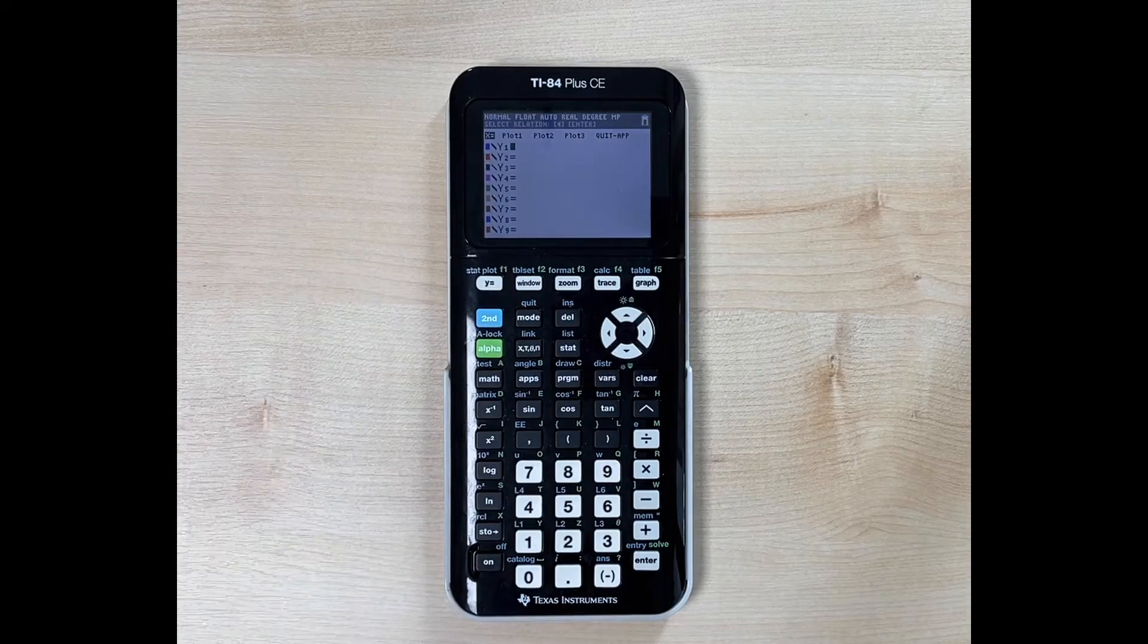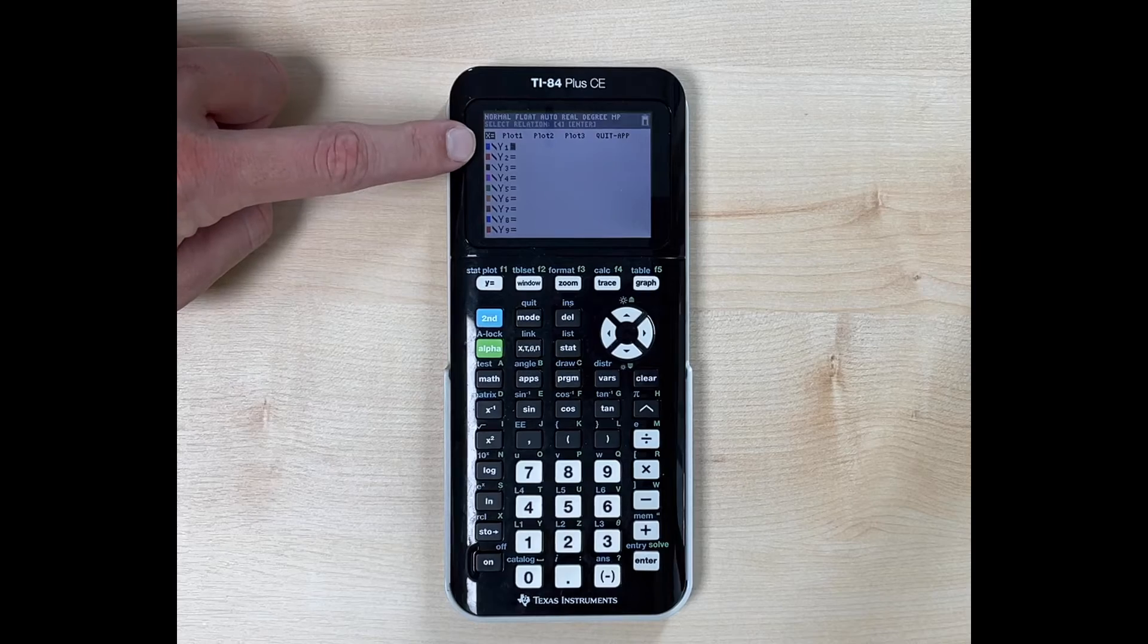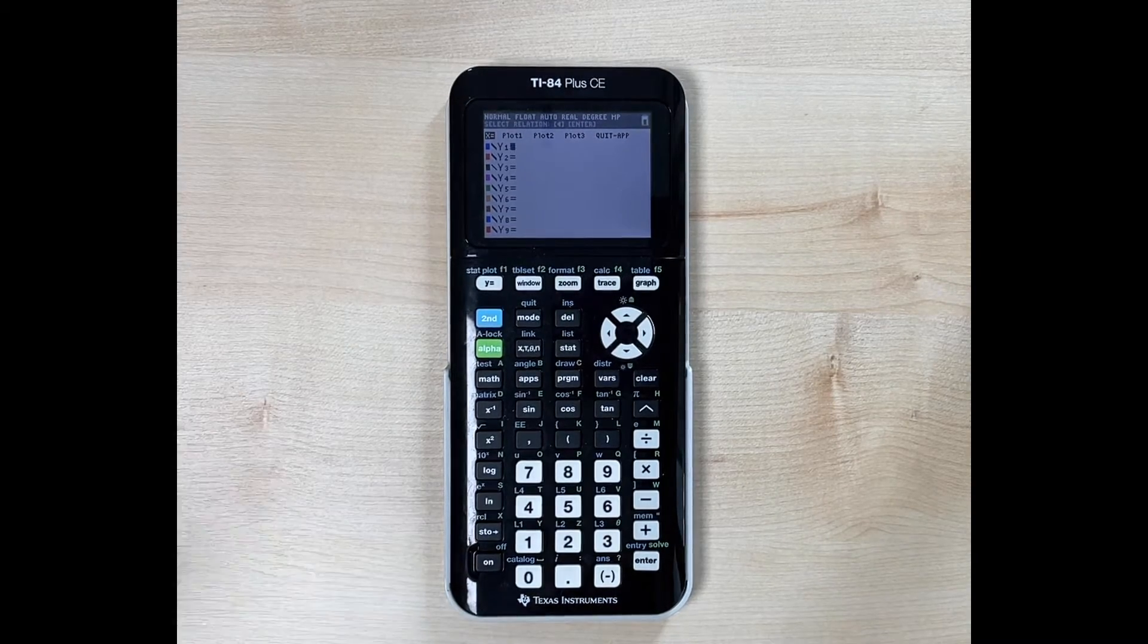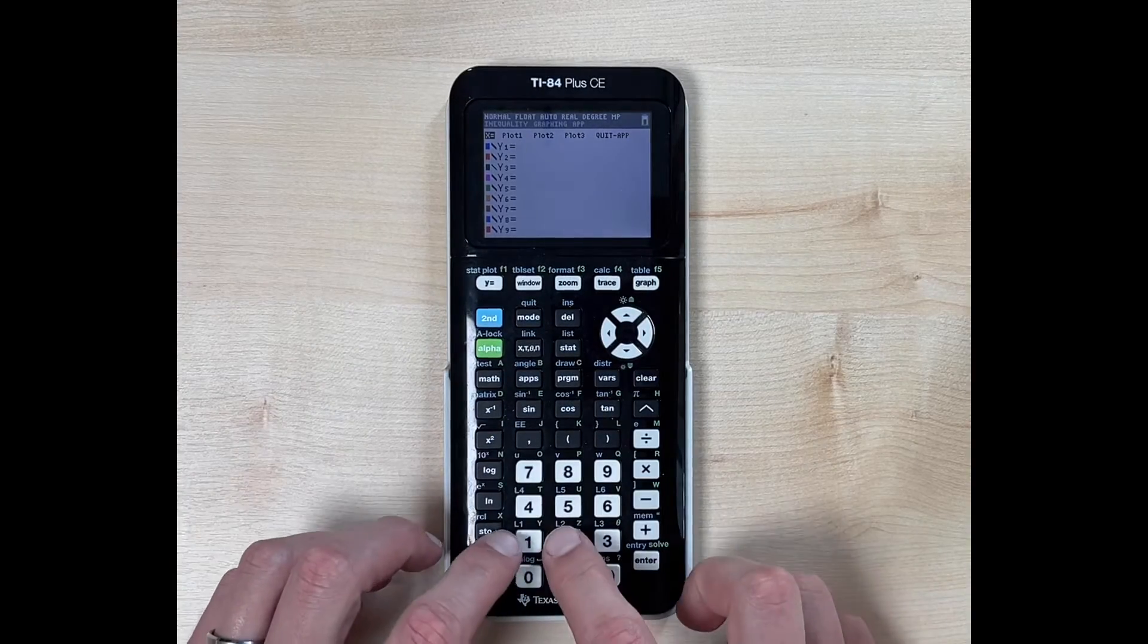We can go back to y equals and notice now we're on y equals. But notice my x equals is highlighted with a black box. That's telling me that we have something graphed. So if you see this and you're trying to graph a linear equation,